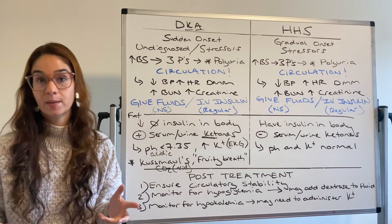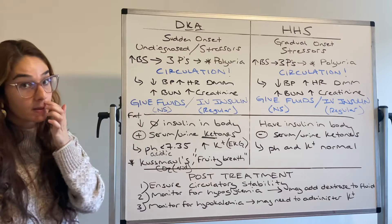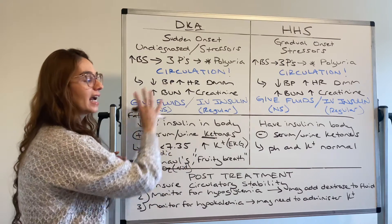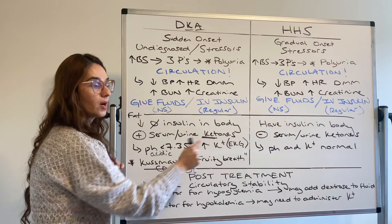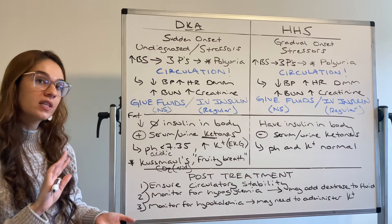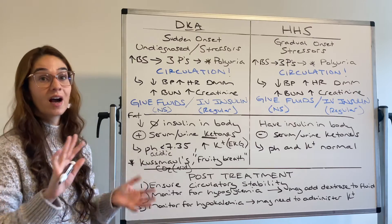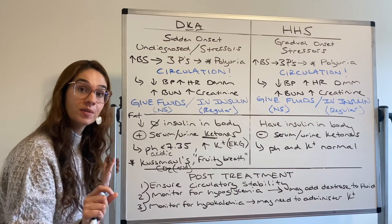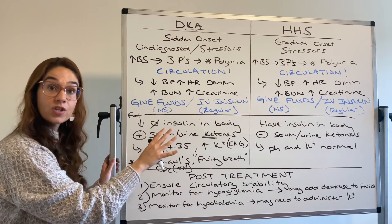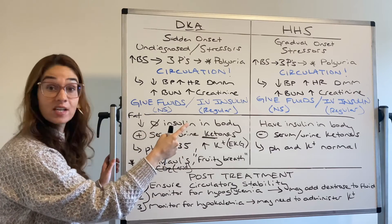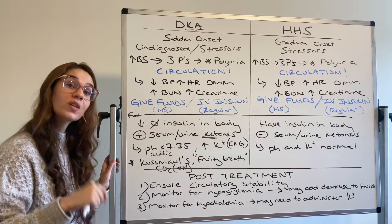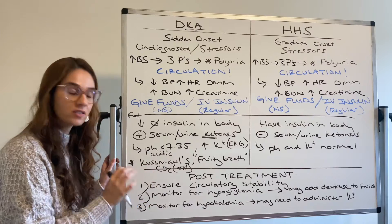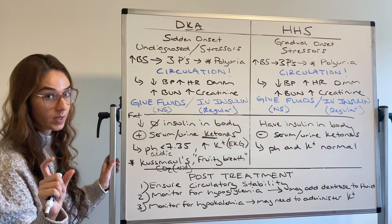Treatment is very similar for both. Priority is circulation — you need to administer fluids, we need to provide IV insulin. And especially with any acid-base imbalance and changes in potassium, you need to be monitoring their heart. Anytime we provide treatment, we can also have a complication from treatment. So post-treatment, you need to ensure circulatory stability. Think about Maslow's — unless it shows you an airway or breathing problem with DKA or HHS, your priority is circulation. We know they're peeing off too much fluid — three Ps, polyuria — they're losing too much volume. Think circulation unless the question shows you airway or breathing.